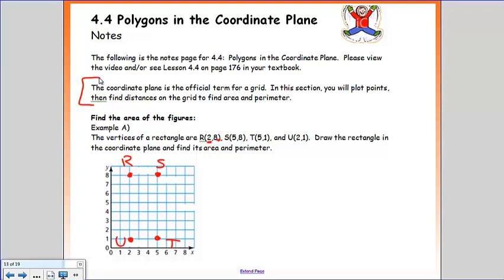It says next to draw the rectangle in the coordinate plane. So I'm now going to connect my dots. It does form a rectangle as stated in the directions. And I'm going to find its area and perimeter.